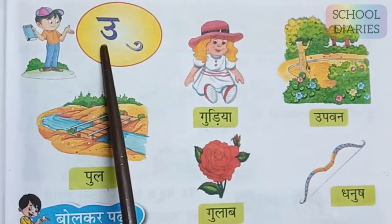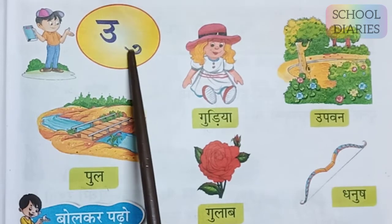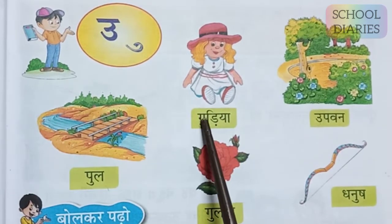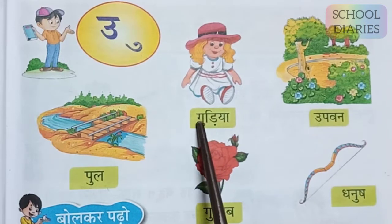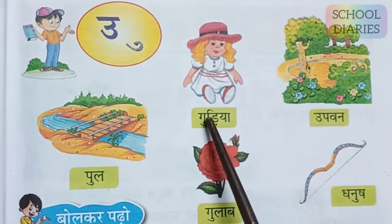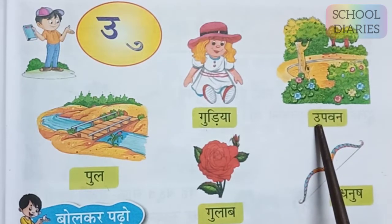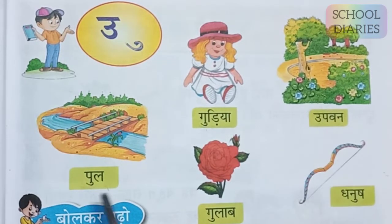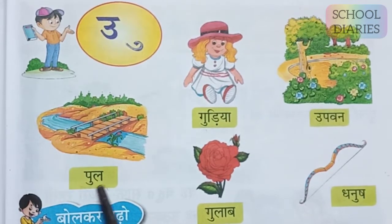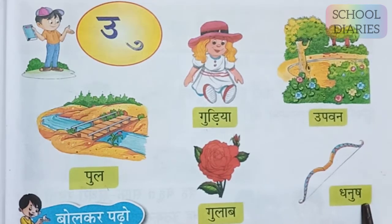This is 'u se ullu' as we have learned, and the matra is like this — it goes towards our left side. When we are writing 'g' and putting choti u ki matra, 'g' becomes 'gu'. Gu-diya, gu-diya. This is already a 'u' letter — upavan. In 'pur' we put choti u ki matra and 'pur' becomes 'pu'. Pul, gulab, dhanush.